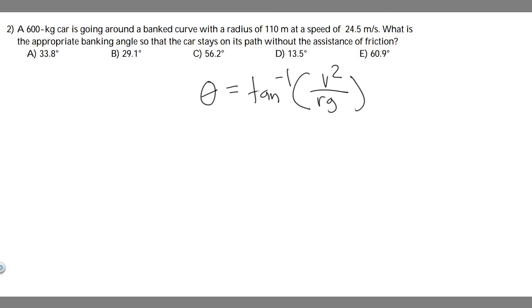In this problem, we're given everything we need to solve. We know the velocity is 24.5 meters per second, we know the radius is 110, and then g is just going to be the acceleration due to gravity, or 9.81 or 9.8.